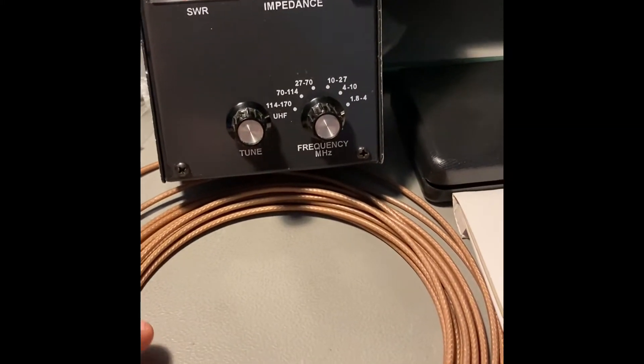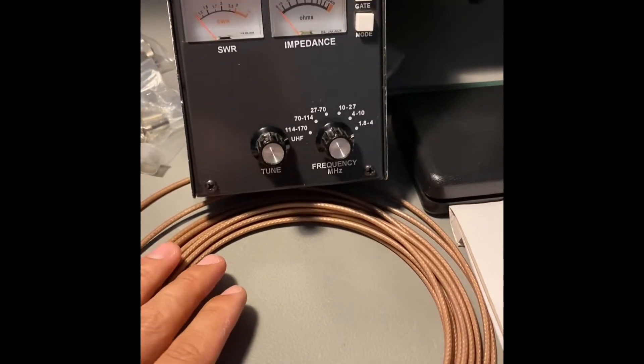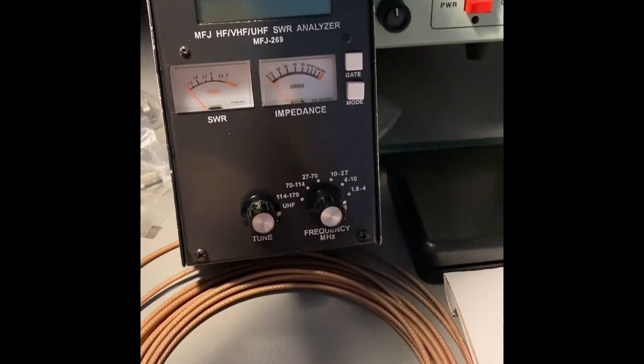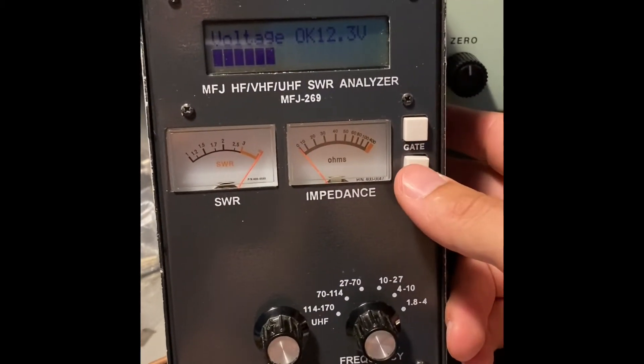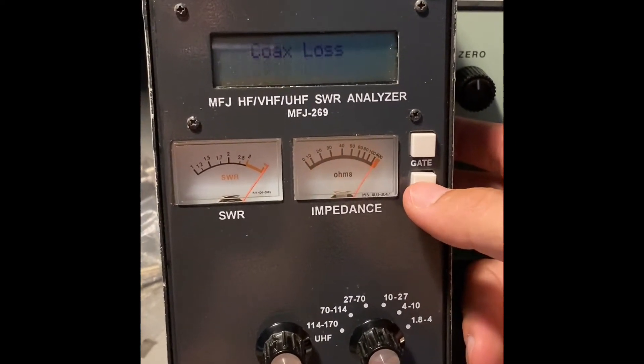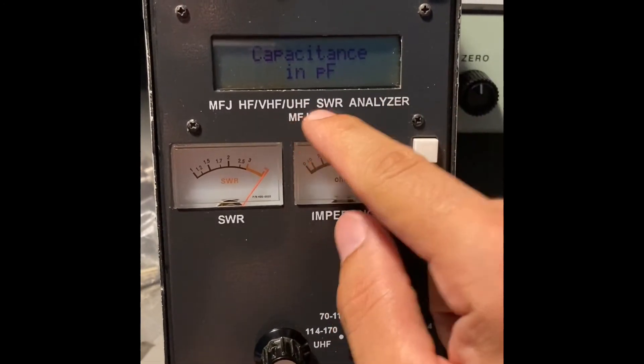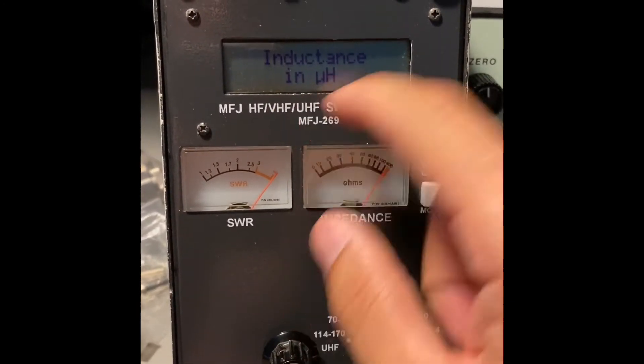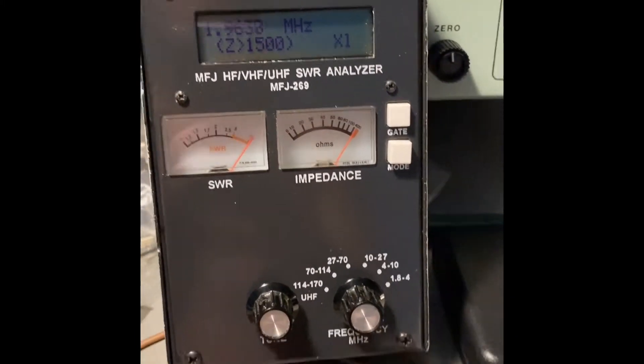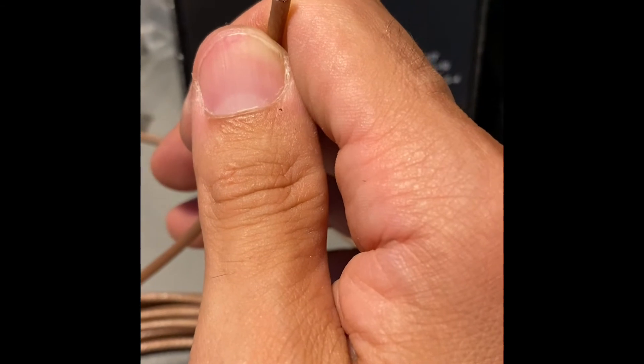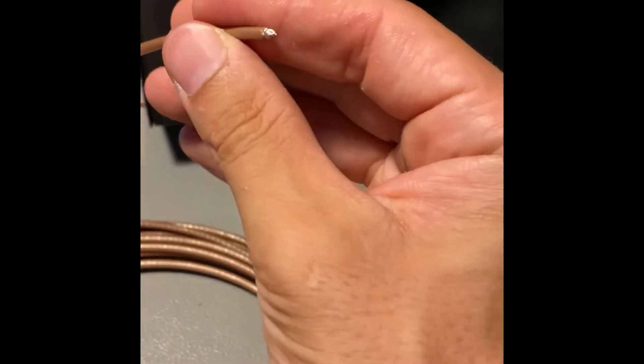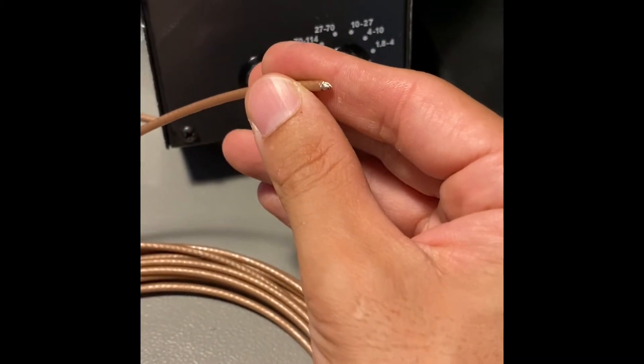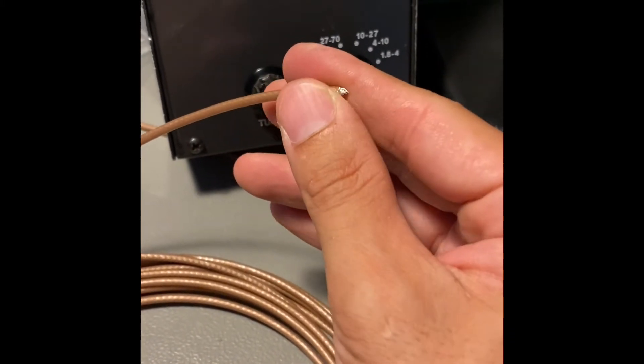To do that I'm going to use my MFJ 269. Let's switch it on and I'll show you on the display - it will measure coax loss, capacitance in picofarads, and inductance in microhenrys. We'll start with inductance. I put a short at the other end because we want to measure the inductance of the line.